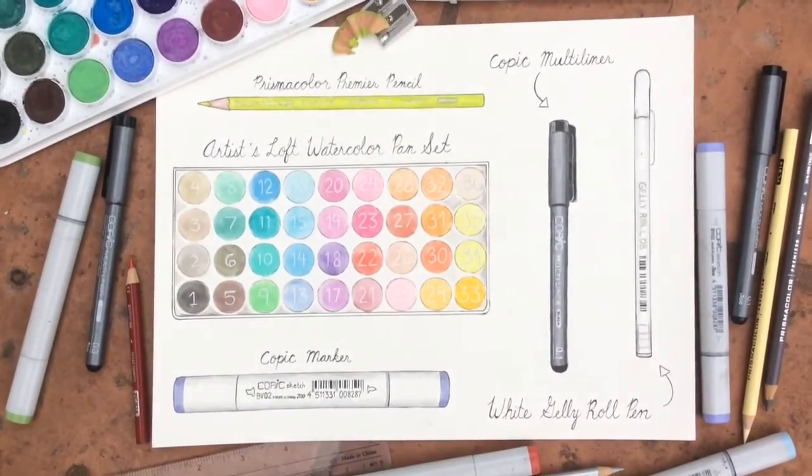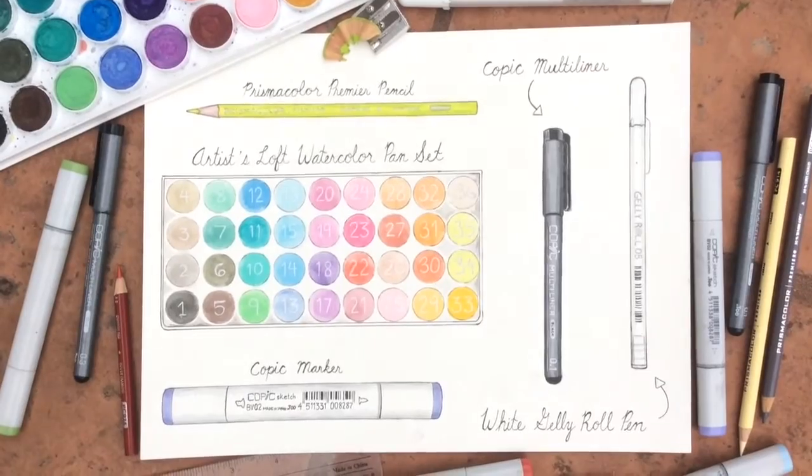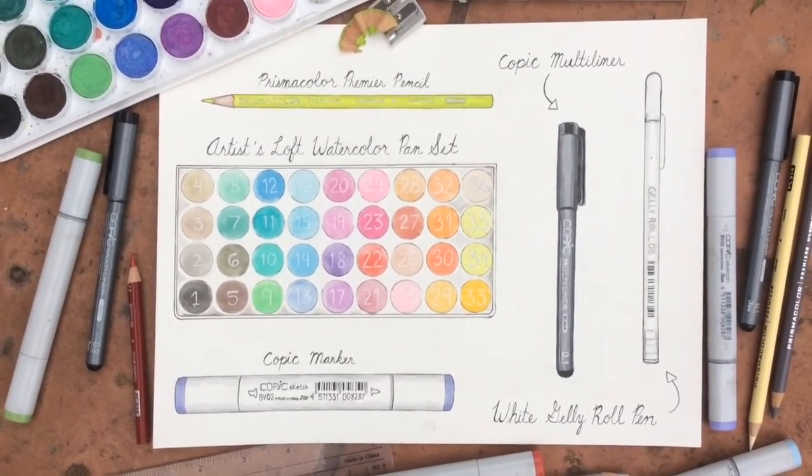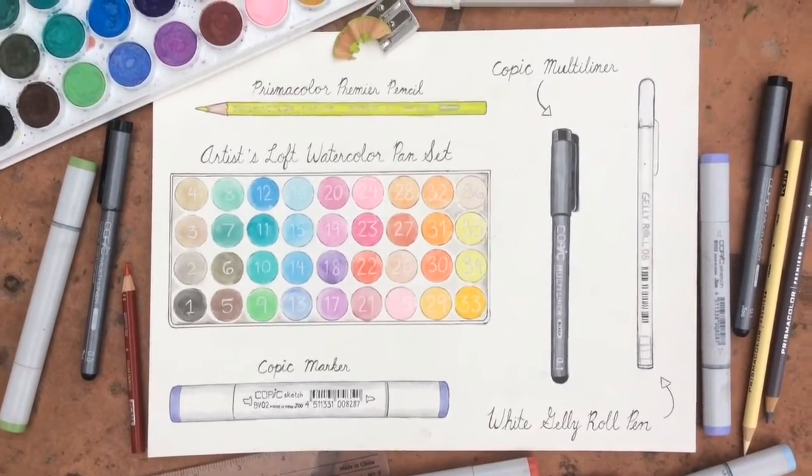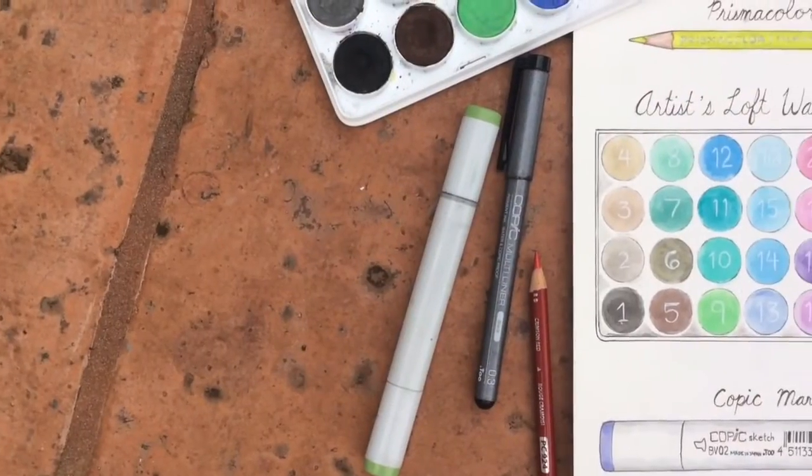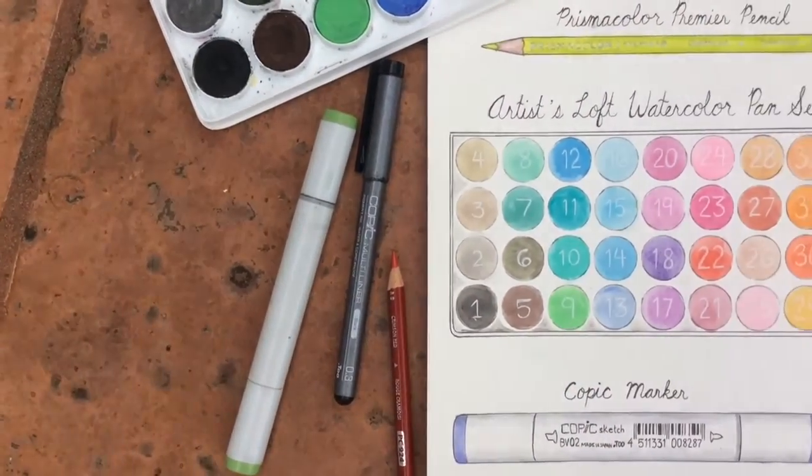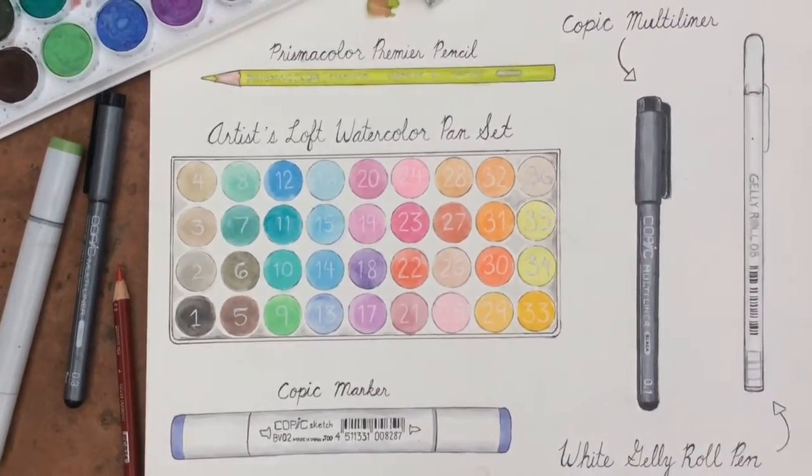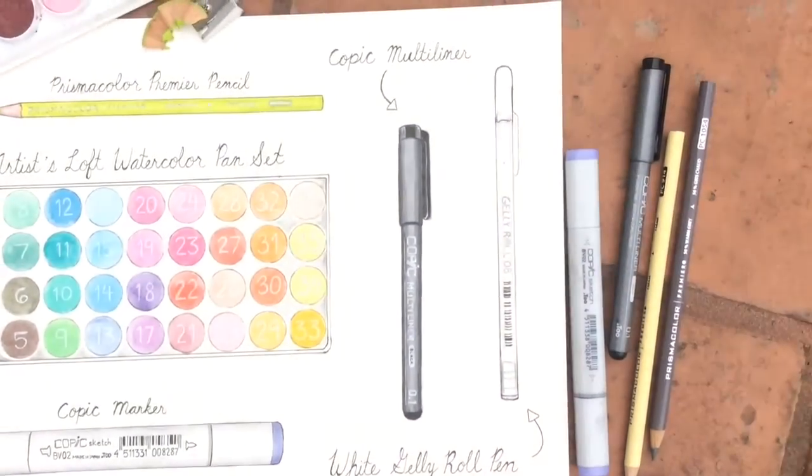And this is the end of the video. These are the art supplies that I use the most often. Watercolor, Copic marker, Prismacolor pencil, Copic multiliner, and a white Jelly Roll pen. And yeah. I like them all, use them all to create beautiful pictures. At least I hope they're beautiful. I think they're beautiful. I hope that's what you think. I need to stop talking, don't I?